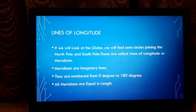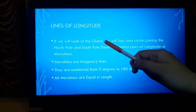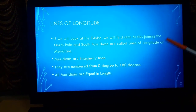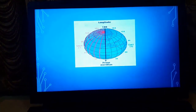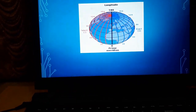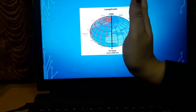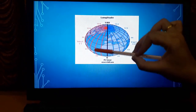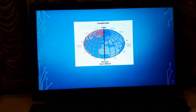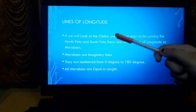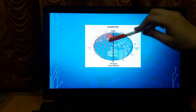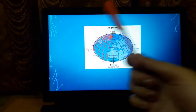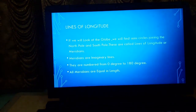Now we'll study the lines of longitude. If we look at the globe, we find semicircles joining the north pole and the south pole — these are called the lines of longitude, or meridians. You can see these red lines in vertical form; they are the longitudes, which are semicircles joining the two poles.